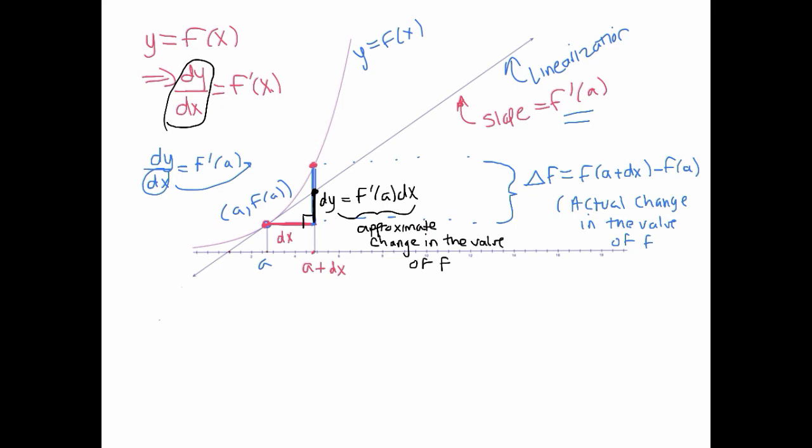So that's what the differential does. And notice it's completely related to the tangent line, right? We're using the tangent line there. So the thing to note is that dy, which we often write as df, just because they can be interchanged, is equal to f prime of a times dx.